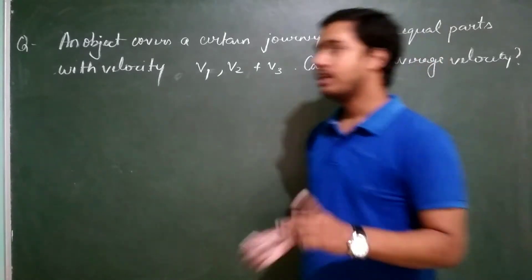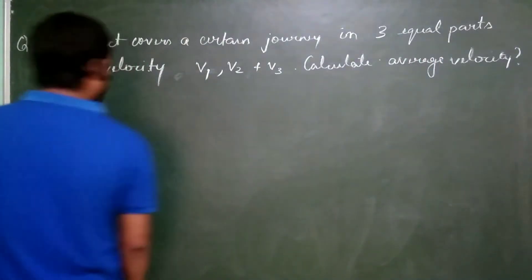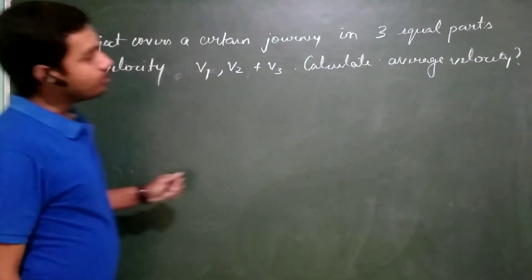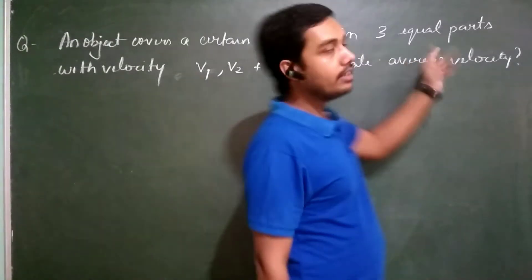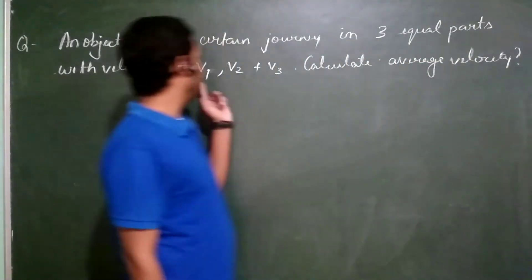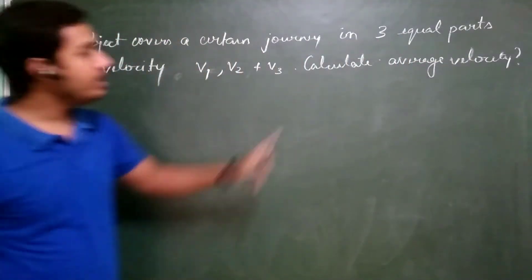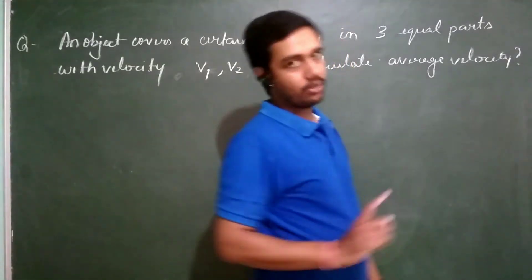Now I have given you another question similar to that but in this question the journey is covered in 3 equal parts with velocity v1, v2 and v3 respectively. We have to calculate the average velocity.